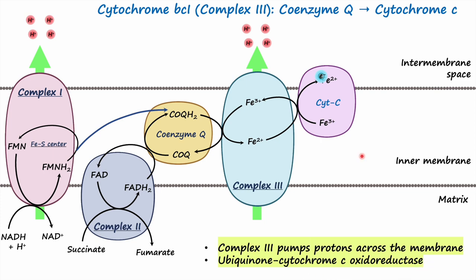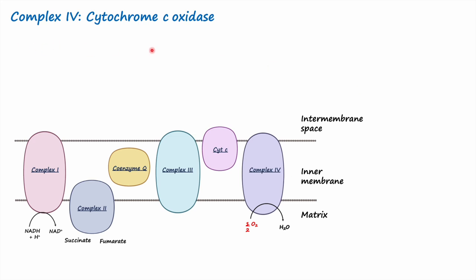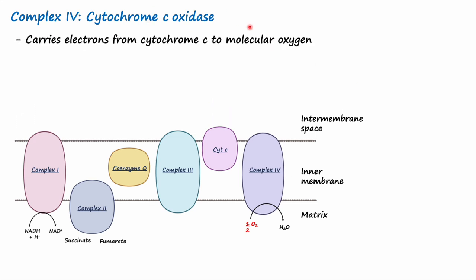Cytochrome c, like coenzyme Q, is also a mobile electron carrier, but it is a surface protein as opposed to coenzyme Q which is an integral protein. Cytochrome c is loosely associated with the cytosolic side of the inner membrane towards the intermembrane space, which allows it to move from one complex to another and carry electrons. Next is Complex 4, cytochrome c oxidase, which carries electrons from cytochrome c to molecular oxygen.